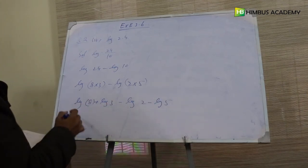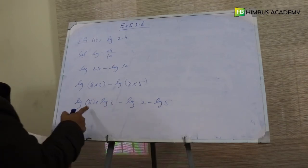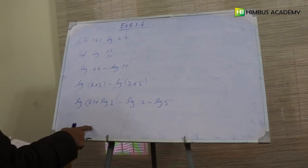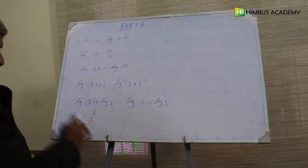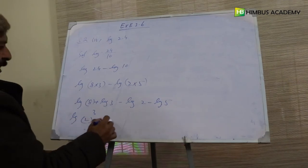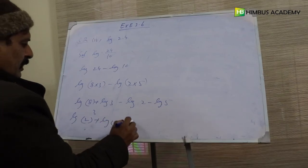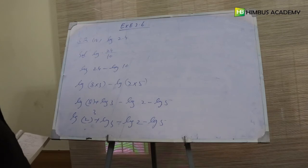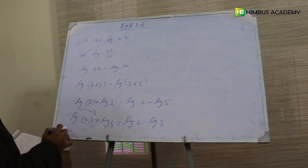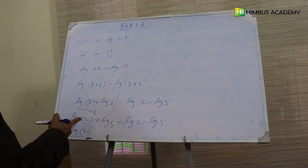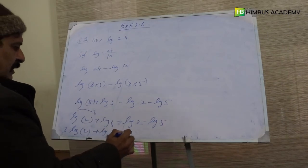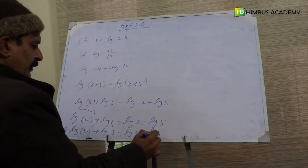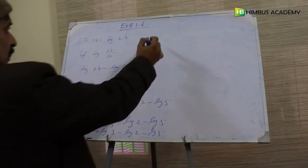اب log of 8 جو ہے، 8 کو 2 cube لکھیں۔ So: log of 2 cube plus log of 3 minus log of 2 minus log of 5. Third law کے مطابق log of m power n = n log of m، تو یہ بنتا ہے: 3 log of 2 plus log of 3 minus log of 2 minus log of 5. Now put values.